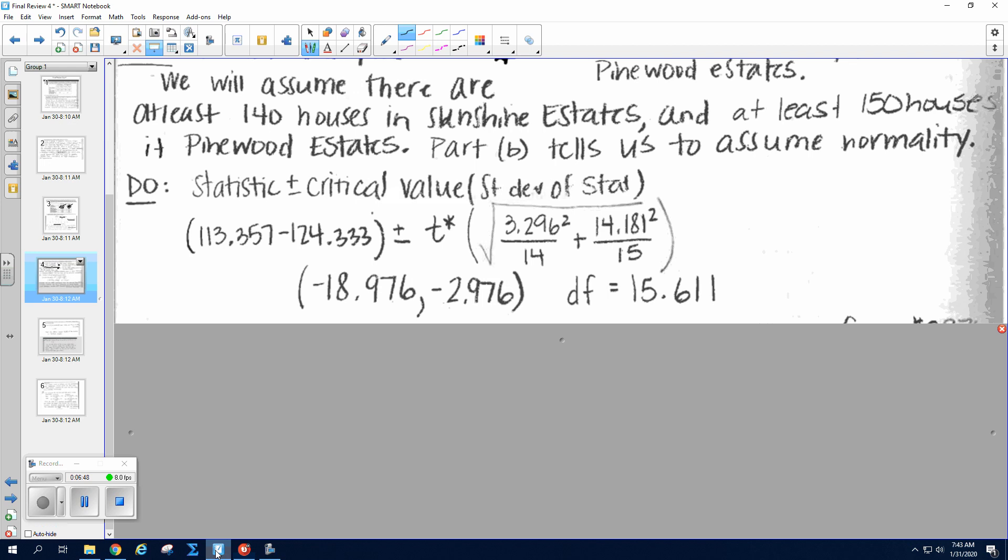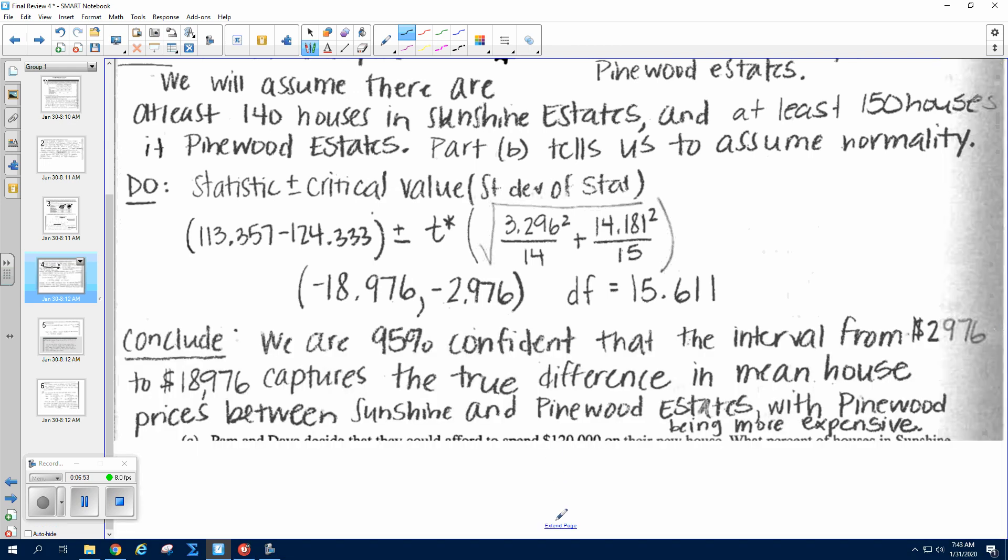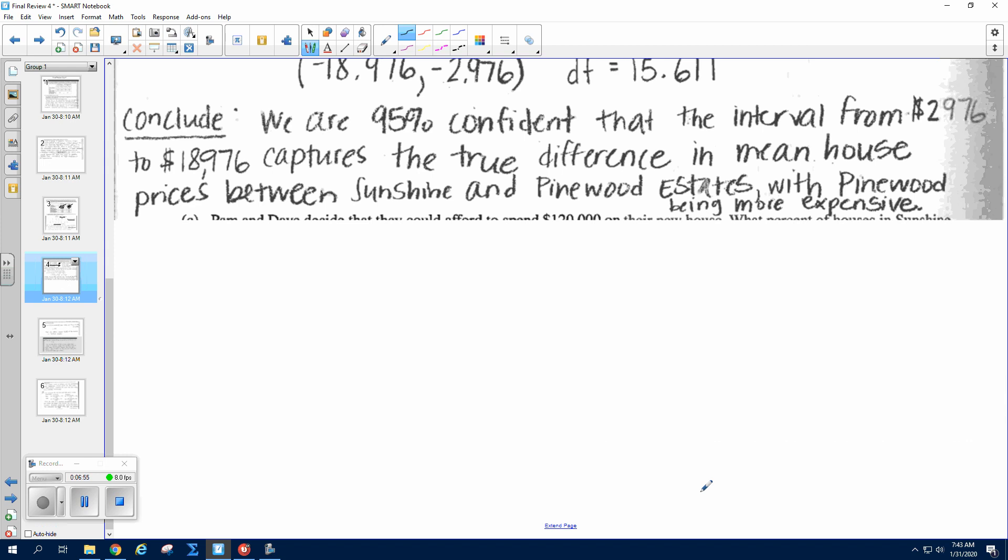And then we conclude: we are 95% confident that the interval from—notice I changed it to thousands—so two thousand nine hundred seventy-six to eighteen thousand nine hundred seventy-six. If you didn't change it to thousands, you need to write in parentheses 'in thousands.'